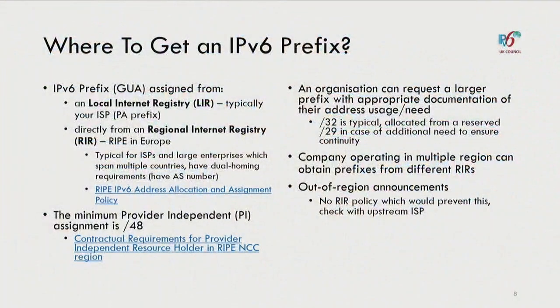At RIPE there are links to the address allocation and assignment policy — not too long, but interesting to read. The minimum assignment you'll get is a /48. Nowadays everyone just gets a /48, but there are only 16 bits between /48 and /64, so there may be good reason to request a larger prefix. For that you provide appropriate documentation — and since you've already gathered your requirements, you have the documentation ready. Typically the assignment would be a /32, allocated from a /29, so if you need more space later, you have continuity within the RIR system.